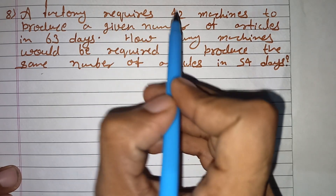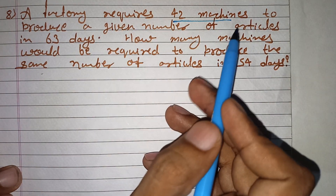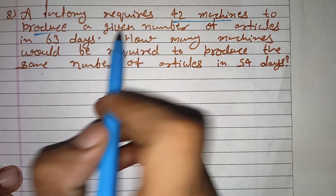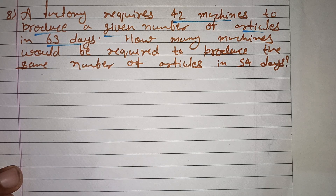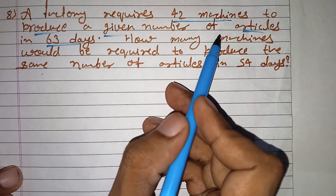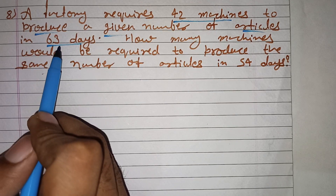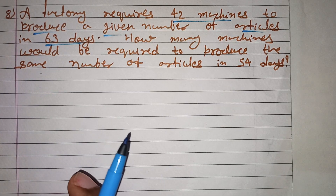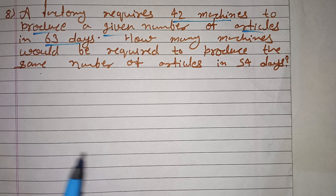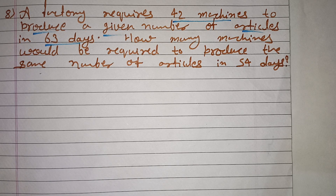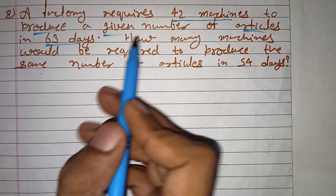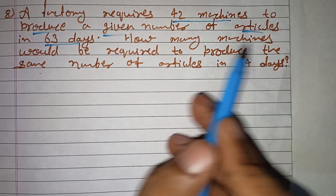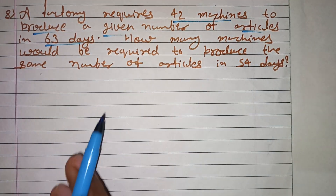तो सवाल में क्या कह रहा है — 42 machines जो है, कुछ articles बनाती है 63 days में। मतलब किसी machine के द्वारा किसी समान का एक पार्ट बन रहा है — उसको हम article कह रहे हैं।